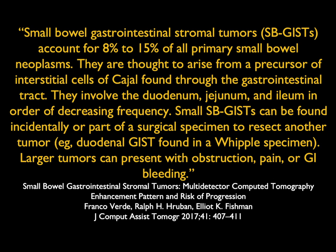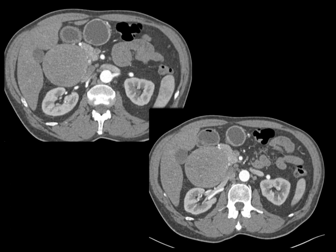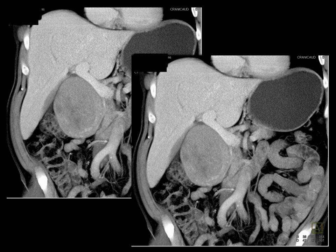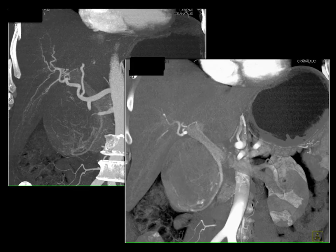By location, duodenum is most common, then jejunum then ileum. Small lesions are most commonly picked up when patients present with GI bleeding. When small, the tumor appears intraluminal; with exophytic growth it can simulate other tumors, and 3D can be very helpful. One case was sent for suspected pancreatic cancer — no dilated ducts, very well defined — and then the possibility of a neuroendocrine tumor or a duplication cyst was considered. Ultimately it was a solid mass pushing on the portal vein and SMV but not invading, with some increased vascularity on arterial phase — a GIST tumor of the duodenum simulating a pancreatic mass.